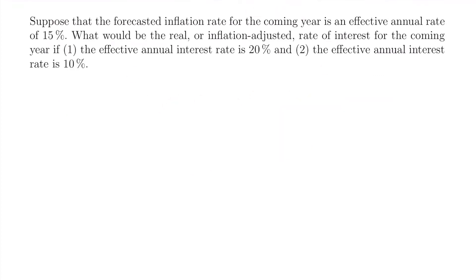Here's our example problem. Suppose that the forecasted inflation rate for the coming year is an effective annual rate of 15%. What would be the real or inflation-adjusted rate of interest for the coming year if: one, the effective annual interest rate is 20%, and two, the effective annual interest rate is 10%? We have two parts, and we'll work on them simultaneously to show the effects of inflation.